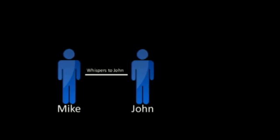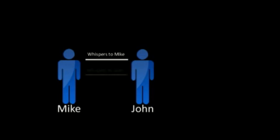But what happens when John wants to edit Mike's information? He can't. John's a client. In client mode, you cannot add, modify, or delete any VLANs. So John is stuck with the information that Mike has given him.